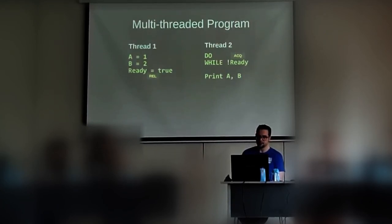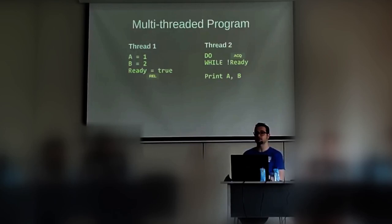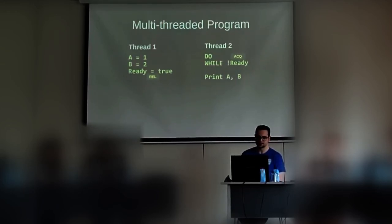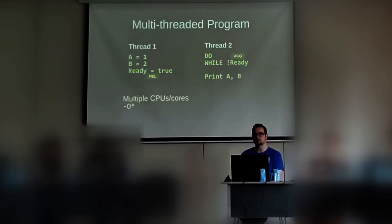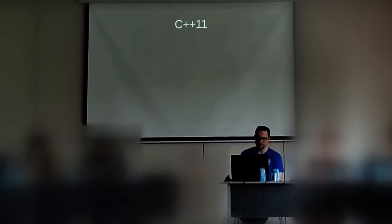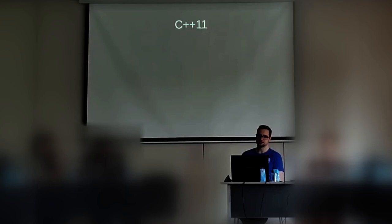It's said that a load acquire syncs with a store release if they have been on the same memory address. So ready is our sync variable — the flag we use to tell if data is ready to be published is our sync point. And now, regardless of single or multiple cores, regardless the level of optimization, the only possible outcome is what we expected. So how do we get that load acquire and store release magic in C++?